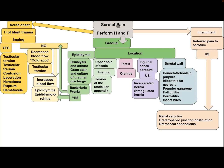When approaching a child with scrotal pain after history and physical examination: if onset is acute, determine whether there is a history of blunt trauma. In both cases — yes or no — the patient needs imaging. If there is a history of trauma, the differential diagnosis includes testicular torsion, testicular trauma, contusion, laceration, hematoma, rupture, and hematocele.